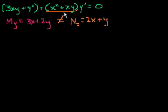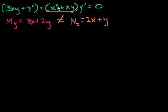In the last video, we had this differential equation. It at least looked like it could be exact, but when we took the partial derivative of this expression — which we could call m — with respect to y, it was different than the partial derivative of this expression, which is kind of n in the exact differential equations world. It was different than n with respect to x. It's not exact. But we said, what if we could multiply both sides of this equation by some function that would make it exact?